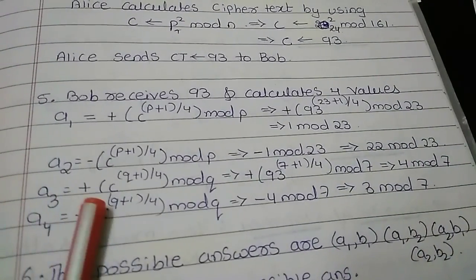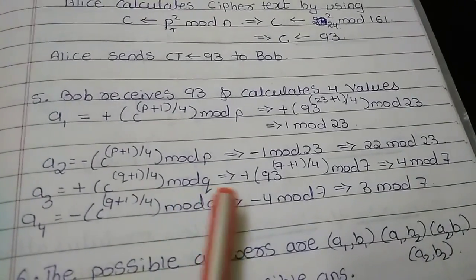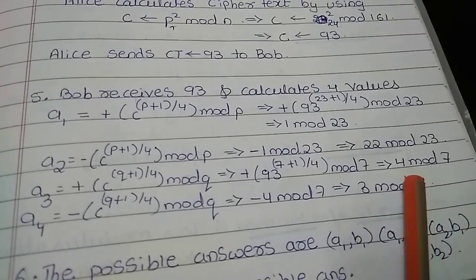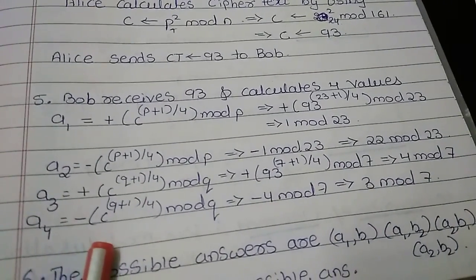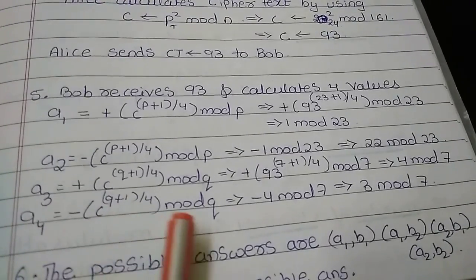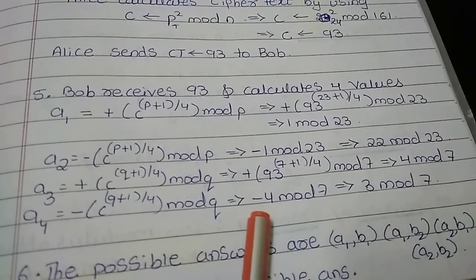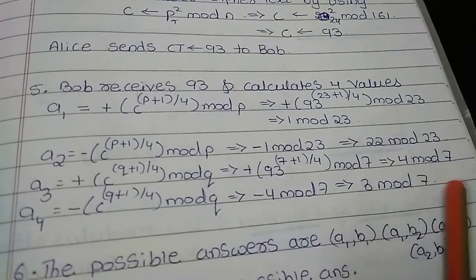Then calculate A3 which is nothing but C to the power Q plus 1 by 4 mod Q. So 93 to the power 7 plus 1 by 4 mod 7 is going to give you 4 mod 7. And lastly minus C to the power Q plus 1 by 4 mod Q is going to give minus 4 mod 7. This minus should be written in a plus, so I will write 7 minus 4 that is 3 mod 7.